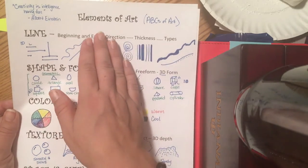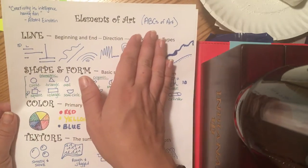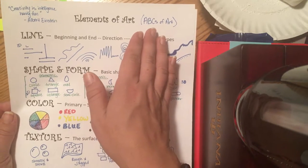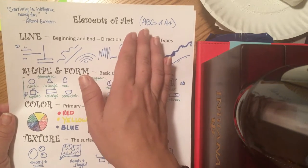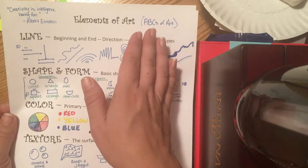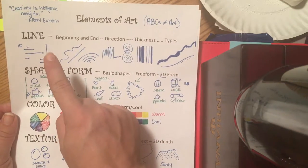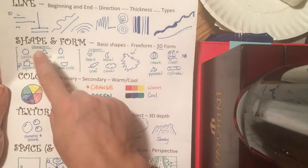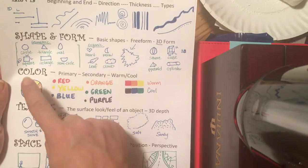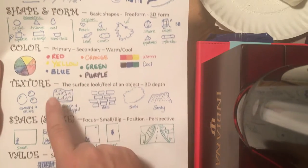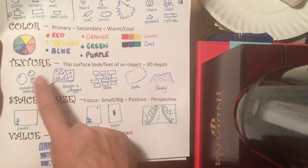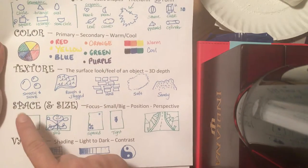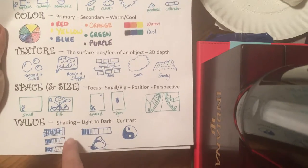Elements of art are just like the ABCs of art. So just like you study and learn your ABCs for reading and one-two-threes for mathematics, we are also going to learn the ABCs of art, which are line, shape and form, color, and advanced elements which are texture — how something looks or feels — space and size, and value.